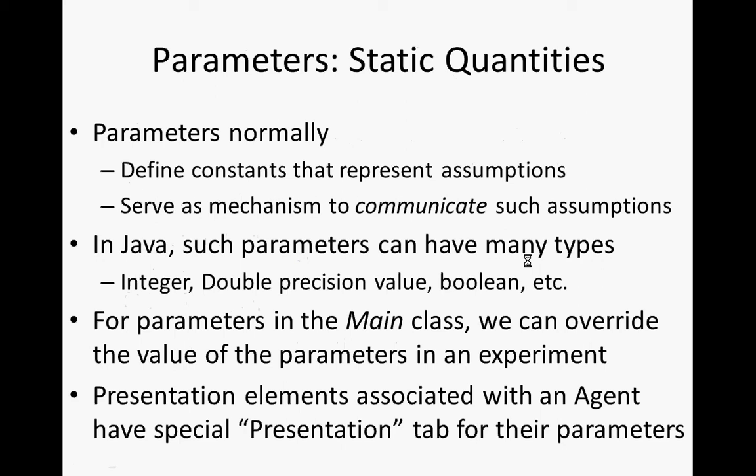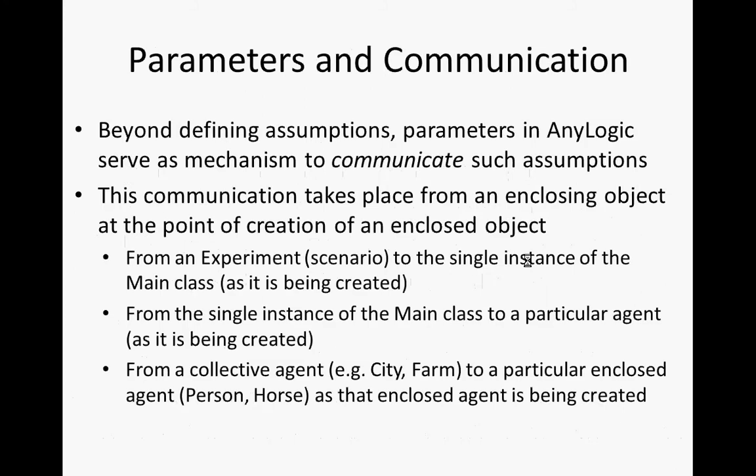Let me state this and I'll come back to it later. When the main class is created, if main has a parameter associated with it, the experiment can specify that parameter so that when you run a simulation, that parameter has a certain value. If an agent has a parameter, the population in which the agent is subsumed can specify that parameter — or specify a rule for it, like drawing it from a distribution. So parameters are means both of specifying less frequently changing values and for communicating those values from the point of creation to where it's used.